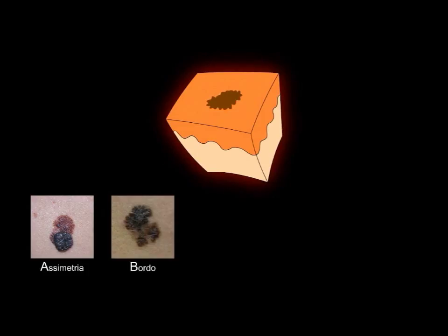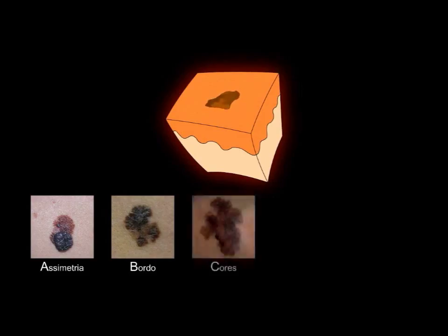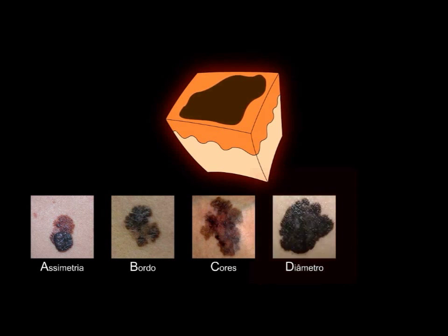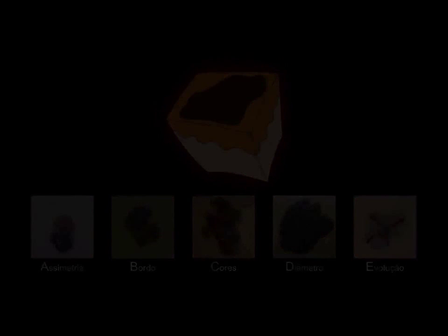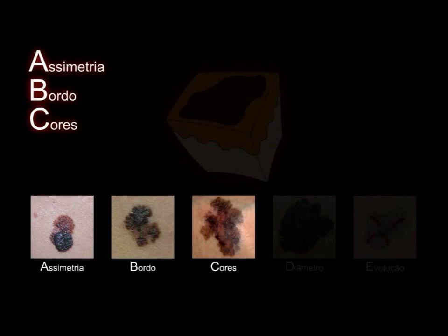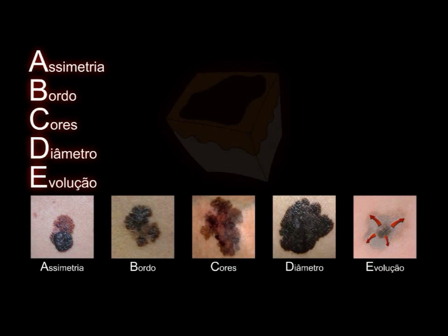To recognize skin cancer, the ABCDE rule is used: A — Asymmetry of the lesion, when the lesion is split in half and one half differs from the other. B — Irregular border: the contours of cancerous lesions are irregular and do not form a smooth shape. C — Color: cancerous lesions have multiple colors, and can be black and brown with reddish areas. D — Diameter: generally larger than benign neoplasias. E — Evolution: the growth of the spot.